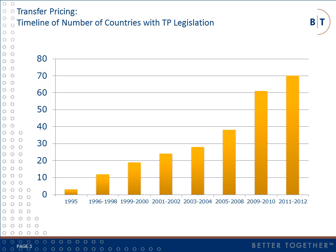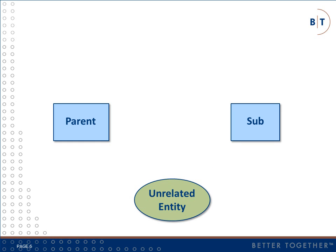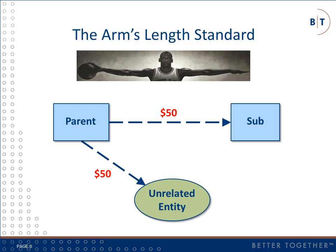In response to the increase in global international trade and ballooning national budget deficits, many countries, including the U.S., have significantly expanded enforcement efforts in the past few years. The simple objective of transfer pricing law is to require companies to compensate internal business units for property and services in the same way they would compensate an external or unrelated business unit. The standard used to measure the appropriateness of a charge is known as the arm's length standard.